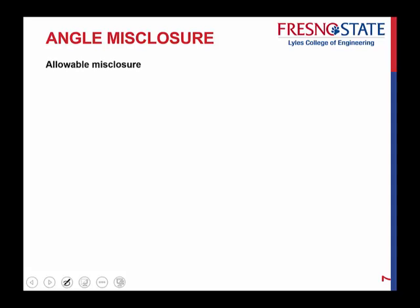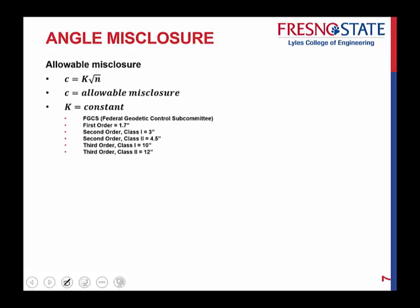Now we consider allowable misclosure. The formula is C = K × √N. C is your allowable misclosure, K is a constant from the FGCS — the Federal Geodetic Control Subcommittee. For a first-order survey, K would be 1.7 seconds; for second-order class 1, K is 3 seconds, and so on. N is the number of angles you're measuring inside that traverse.